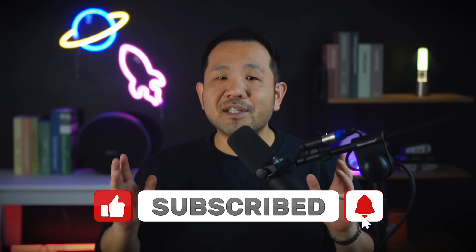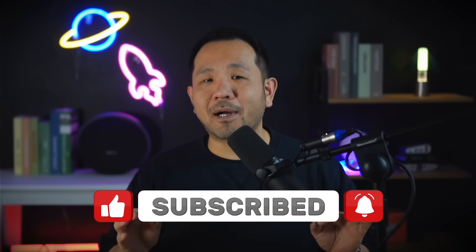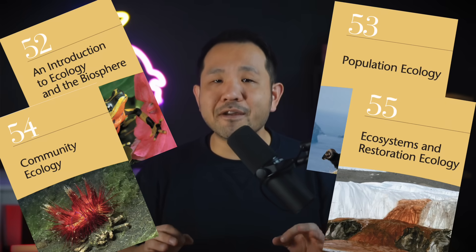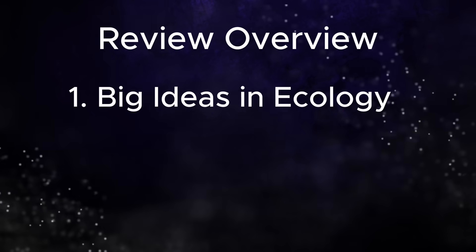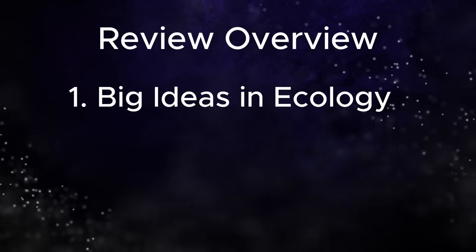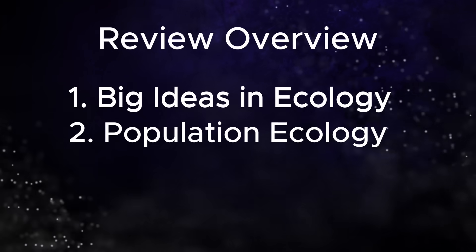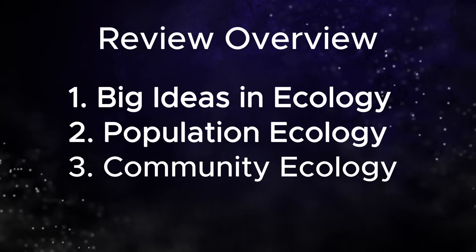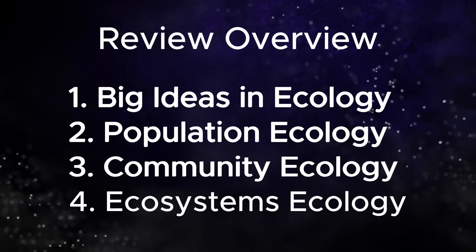In today's video, we'll be tackling the very last unit of AP Biology, which spans several chapters covering various parts of ecology. I've broken down today's video so that we can take a fairly methodical, bottom-up approach. First, we'll review the big ideas in ecology. Two, population ecology. Three, community ecology. And four, ecosystems ecology.